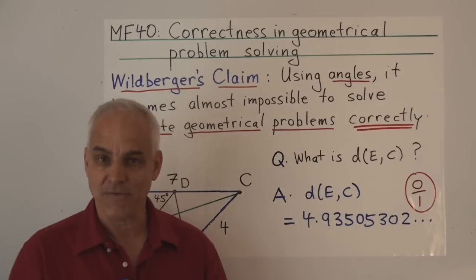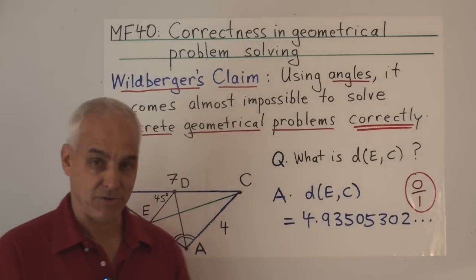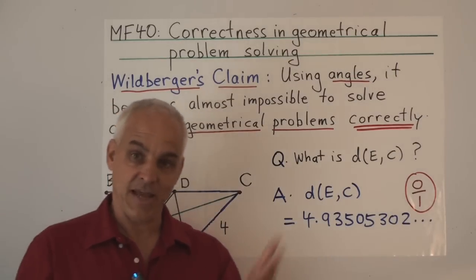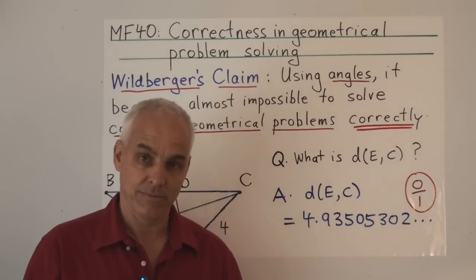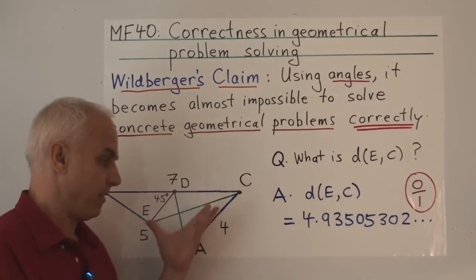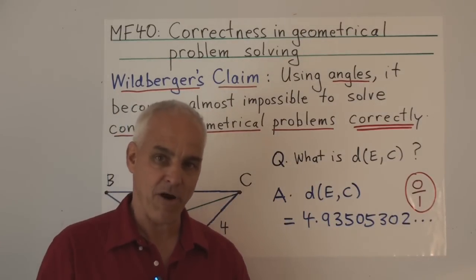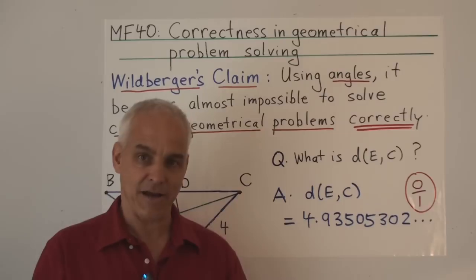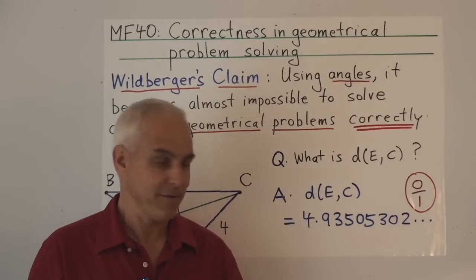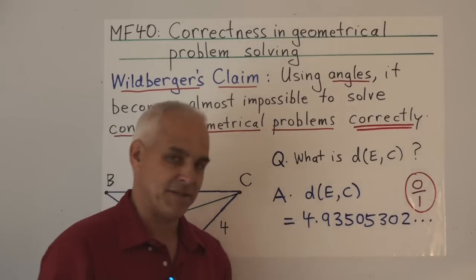I remind you that if you want approximate answers to geometrical questions, you can always just say the answer is zero — approximately any measurement is approximately zero. Are we going to give part marks to that kind of answer? No, we're not. And we're not going to give part marks to this either.